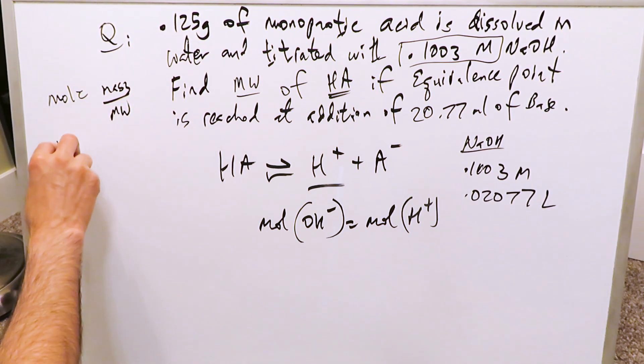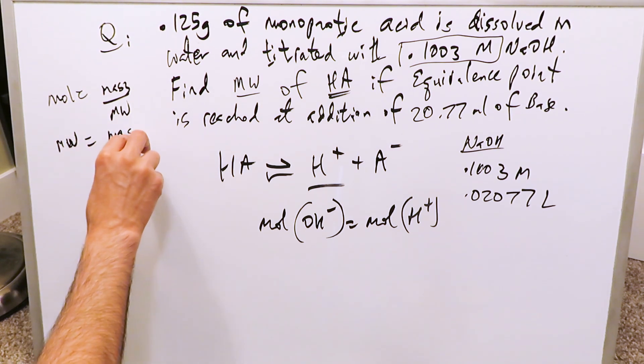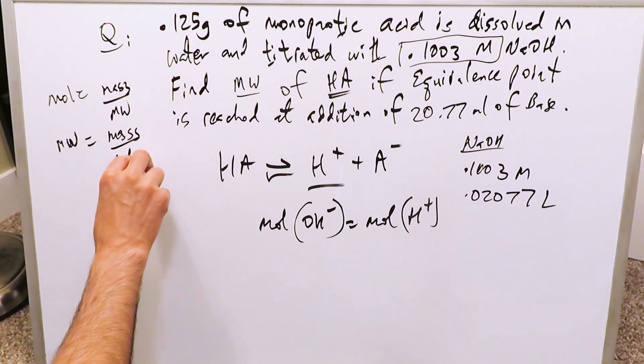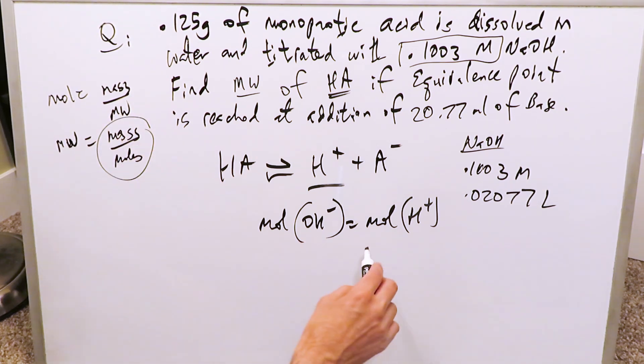I have to determine the molecular weight of the acid, so the molecular weight would be the mass of the acid, which I have, divided by the moles. How can I determine the moles of the acid? If I know the moles of the base, I know the moles of the acid, because the equivalence point is reached. So let's do that.